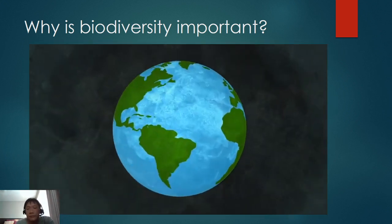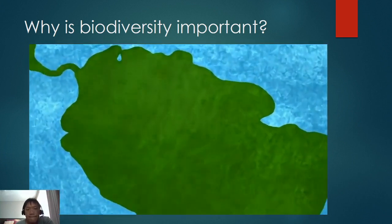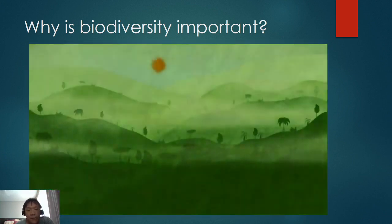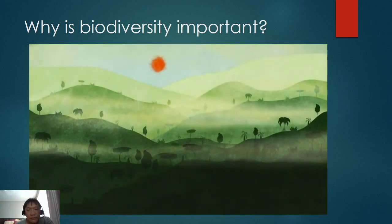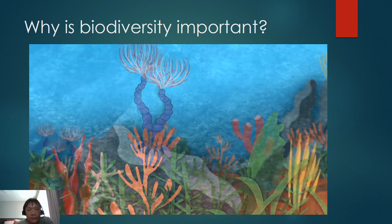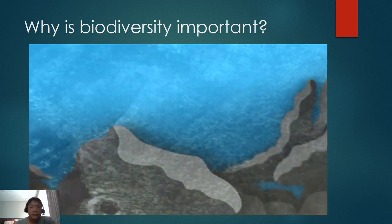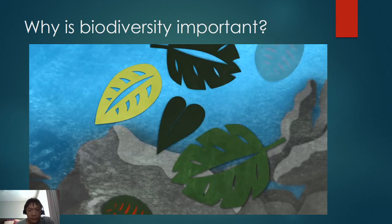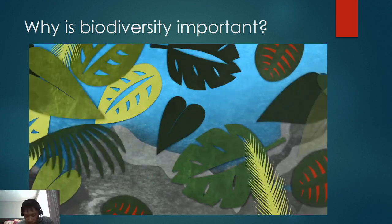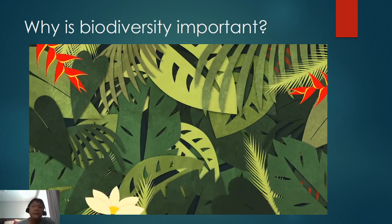Our planet's diverse, thriving ecosystems may seem like permanent fixtures, but they're actually vulnerable to collapse. Jungles can become deserts, and reefs can become lifeless rocks, even without cataclysmic events like volcanoes and asteroids. What makes one ecosystem strong and another weak in the face of change? The answer, to a large extent, is biodiversity.